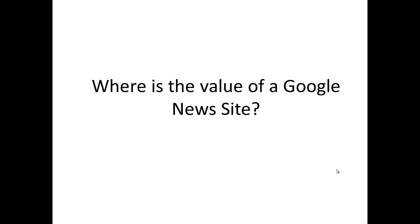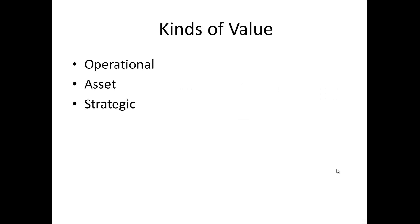So what is the primary value of a Google News site? We're going to discuss that in this video. There are really three categories of value for a site. One is operational, which means how much money can you make running a Google News site from day to day, month to month. The other is the asset value of the site. And the third category is the strategic value of the site.